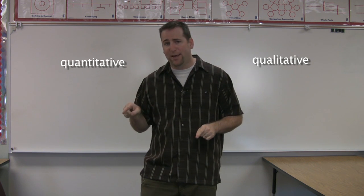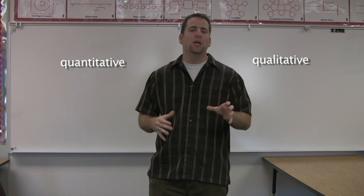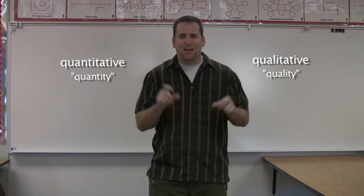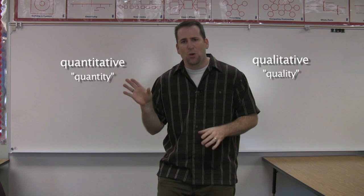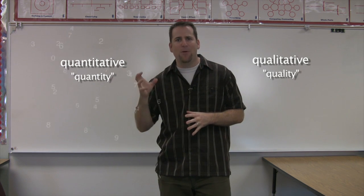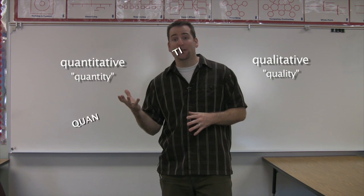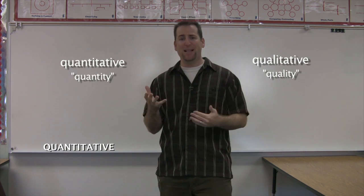Qualitative versus quantitative. Very similar words, but when you break them down and you look at their roots, you see the word quality versus quantity. By themselves, those tell you the difference between the two. I'm going to start with quantity first. When you think about quantity, you think about numbers and amount. And that's exactly what a type of observation quantitative is.